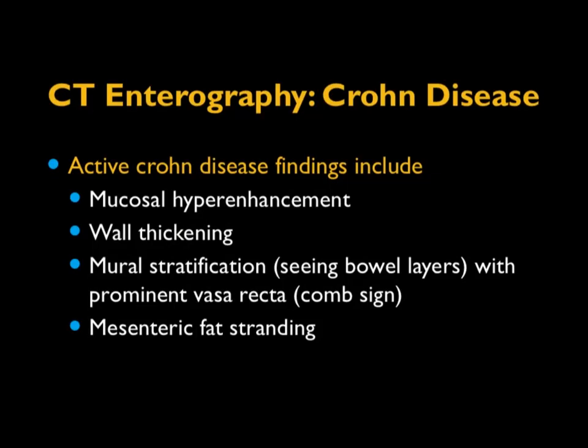We've talked about CT enterography and the signs of mucosal enhancement, wall thickening, mural stratification, and mesenteric fat thickening. It's important to recognize those signs because they're one of the common findings, particularly in younger patients with abdominal pain or the acute abdomen. You want to be able to recognize unsuspected Crohn's disease and, in patients with suspected or established Crohn's, pick up the complications ranging from abscess to liver issues to problems involving multiple organs.